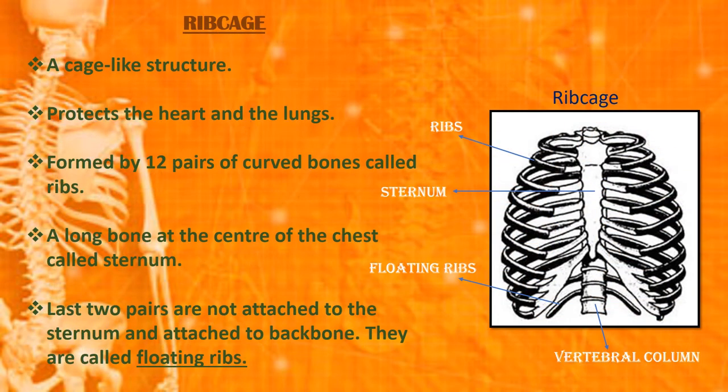The rib cage is a cage-like structure and it protects the important organs present inside. Ribs are a set of 12 pairs of long curved bones which surround the chest in the form of a cage. A long bone at the center of the chest called the sternum holds the ribs in place in the front. The ribs are also attached to the backbone.